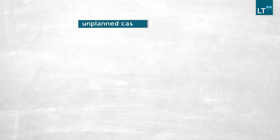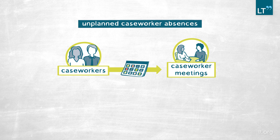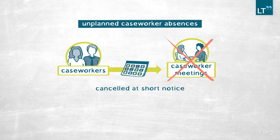The way I address this challenge is by exploiting the incidence of unplanned caseworker absences — more precisely, instances where caseworkers planned to come to work and scheduled meetings but had to cancel them on short notice. As a result of these cancellations, some job seekers unexpectedly see their meeting frequency reduced. I exploit these cancellations to estimate how much unemployment spells get longer when a meeting had to be cancelled, which indirectly informs us about the value of a caseworker meeting.